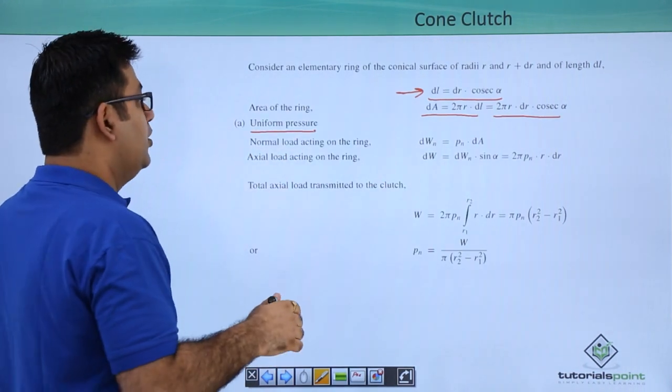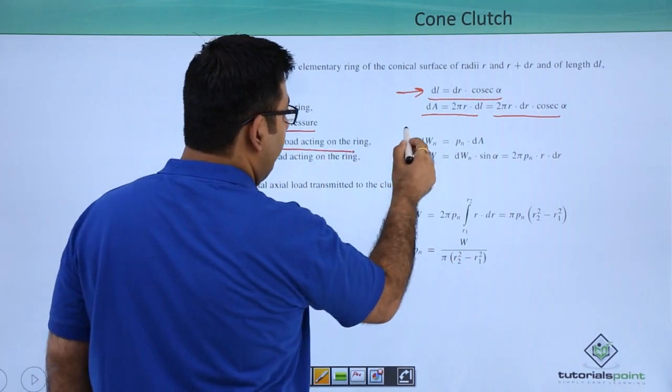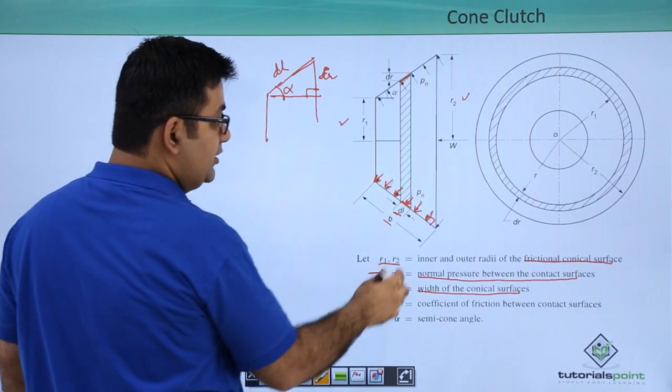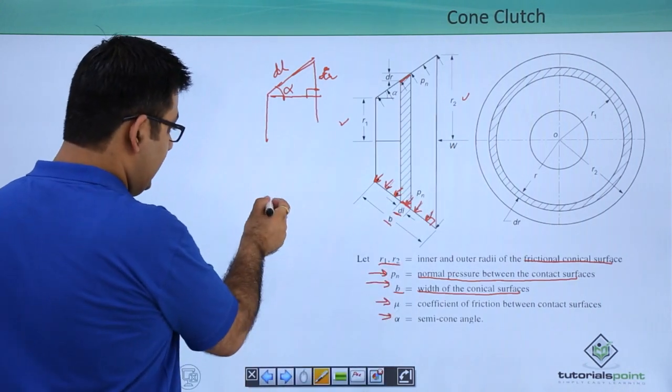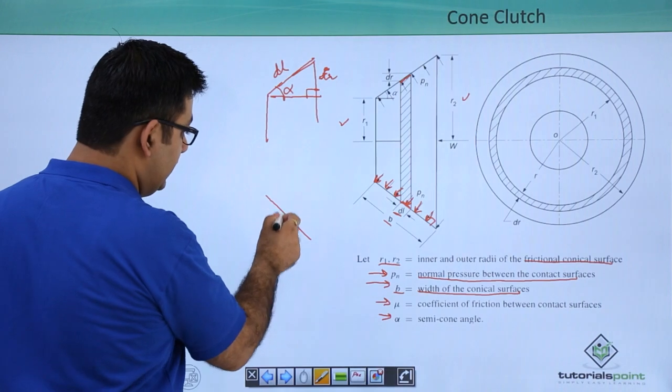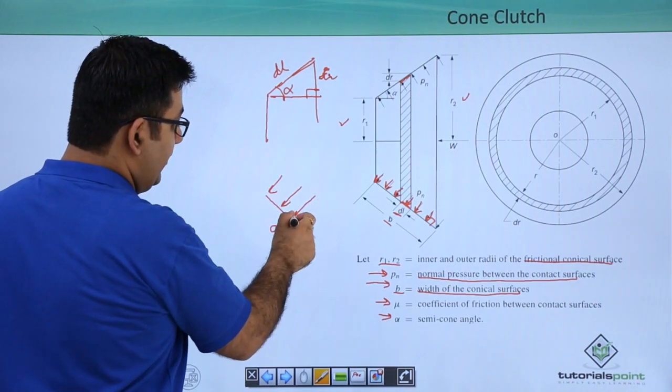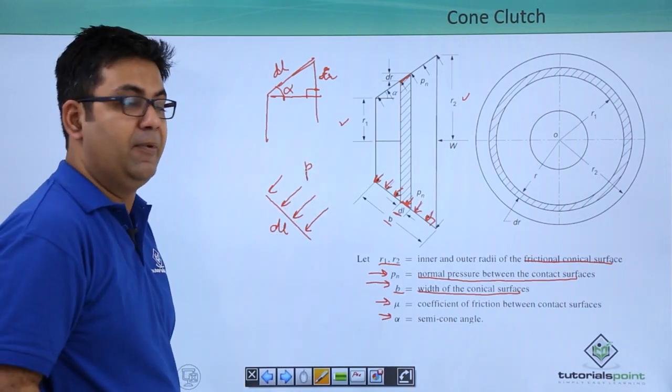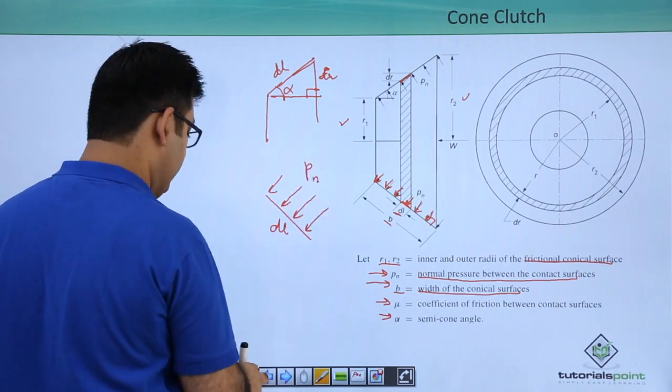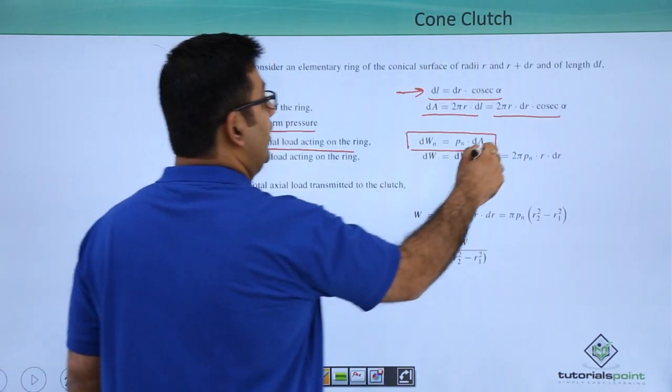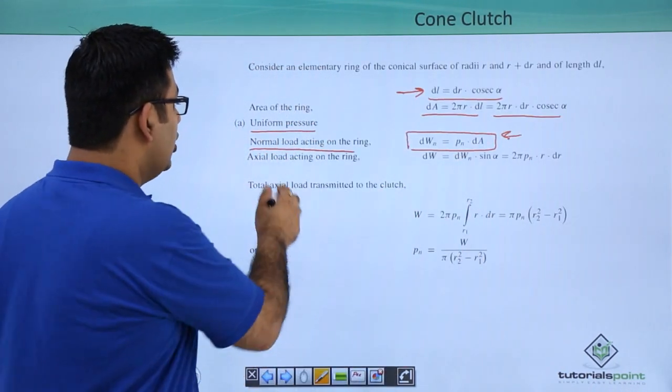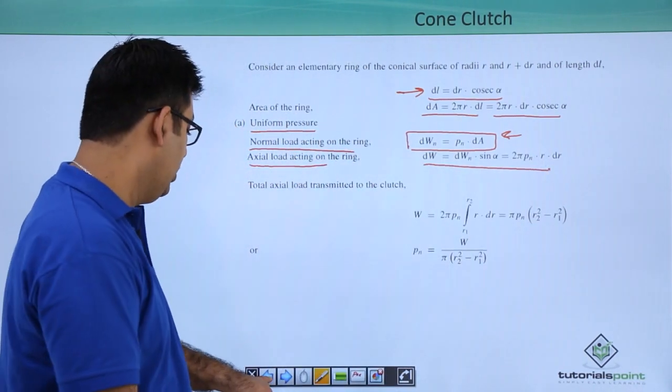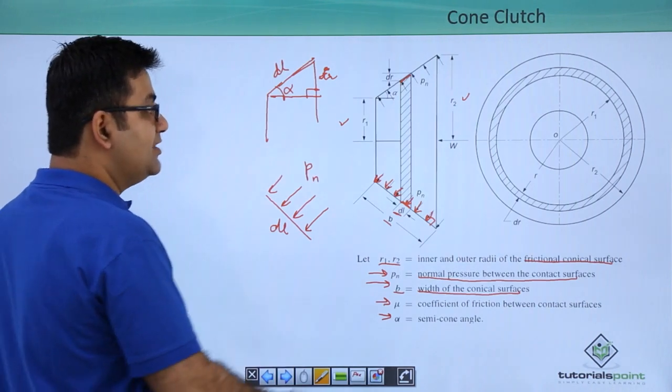Now what is the normal load acting on the ring? That would be this. If you go back, this is the normal pressure on this dl length. We know the area, so if you multiply the area with this normal pressure, you get the normal load on this ring which is dWn. The axial load which is acting on the ring is dWn sin alpha.